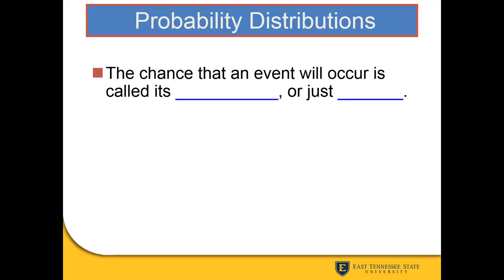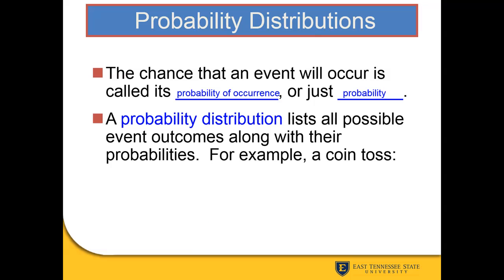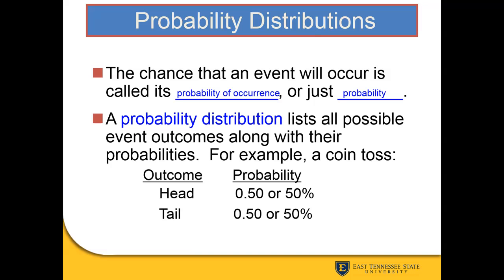Thinking back to probability and statistics, when we talk about the chance of something occurring, we call it its probability of occurrence, where we list all the outcomes and the possibilities that go along with those outcomes. For example, in a coin toss we either get heads or tails, so we have a 50% chance of heads and a 50% chance of tails.